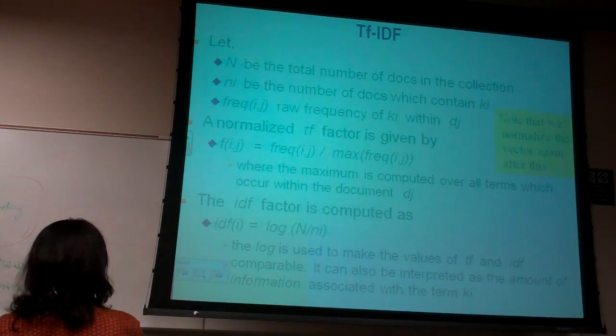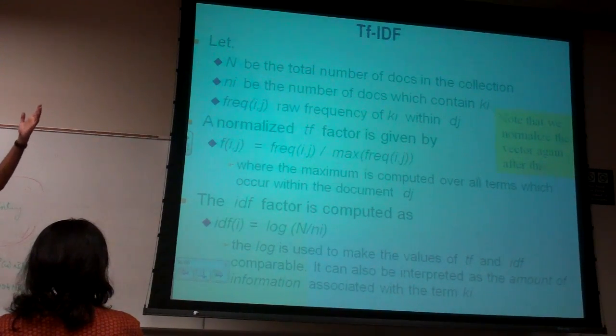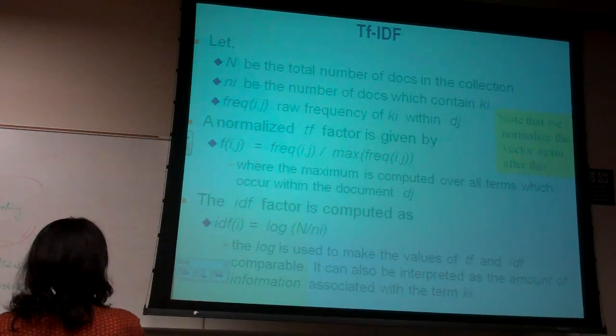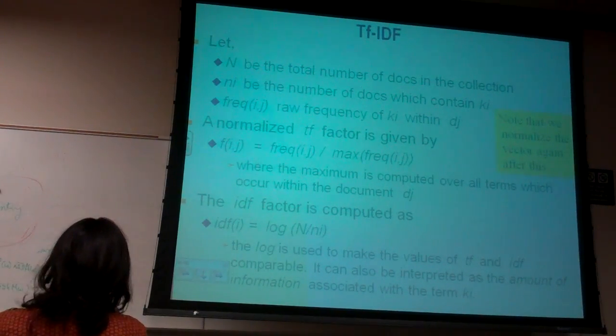So TF weights are always smaller. IDF weights can become 8 billion or something. So they can completely kill the TF weight. So you take log of them to kind of get them into the same range.